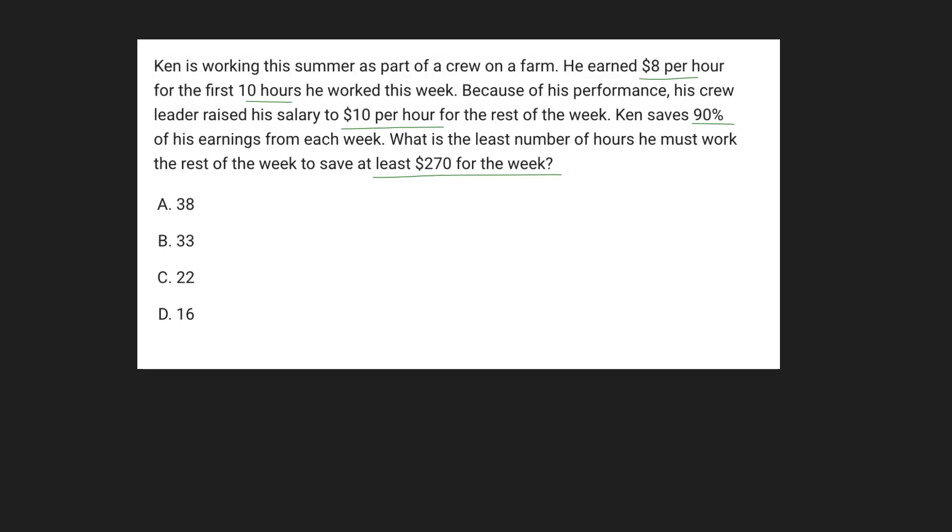So first off, let's just set up our inequality. He needs to save at least $270, so he can save more than $270, but he needs to save at least $270, so greater than or equal to. And then his savings, it says right here he saves only 90% of whatever he earns. So whatever we have with his $8 per hour or $10 per hour for X amount of hours, all that is going to be cut down by 90%. So we can write a 0.9 on the outside and then a parenthesis for all of our values on the inside.